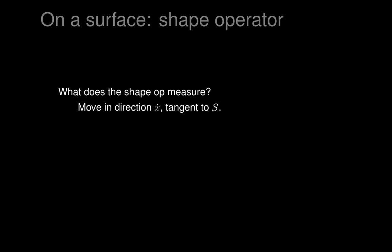Imagine you standing on the surface - your head is pointing up off of the surface, your feet are lying tangent to the surface, and you're going to walk forward with velocity x-dot. You're living at a point x(t) on the surface and you move in a direction x-dot tangent to the surface. As you move, if your surface looks like a valley and you're standing at the bottom, then when you walk forward, your head tilts backward. As you walk up the side of a valley, your head tilts backward as your feet move forward.